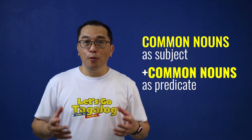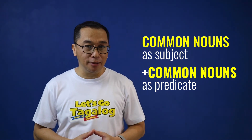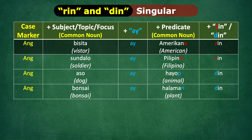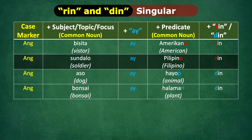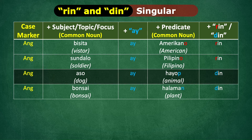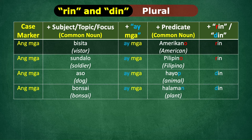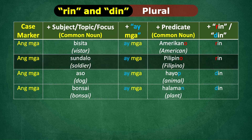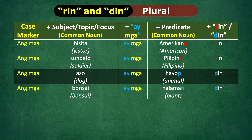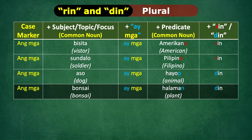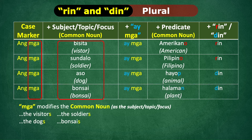Now, let us try using common nouns as the subject with another common noun as the predicate. Ang bisita ay Amerikano rin. Ang sundalo ay Pilipino rin. Ang aso ay hayop din. Ang bonsai ay halaman din. Ang mga bisita ay mga Amerikano rin. Ang mga sundalo ay mga Pilipino rin. Ang mga aso ay mga hayop din. Ang mga bonsai ay mga halaman din. In the ang mga form, mga is modifying the subject and not the predicate.